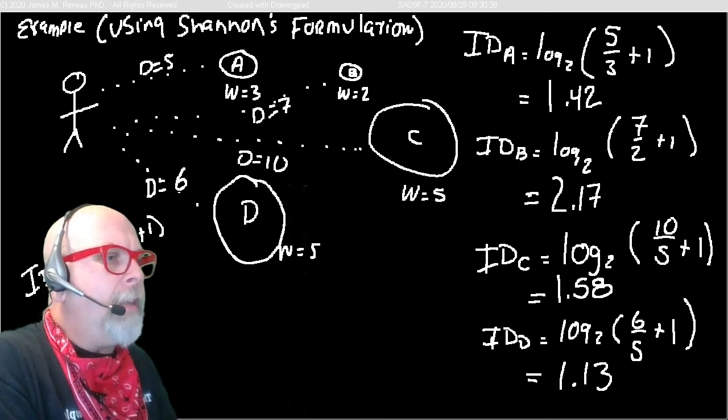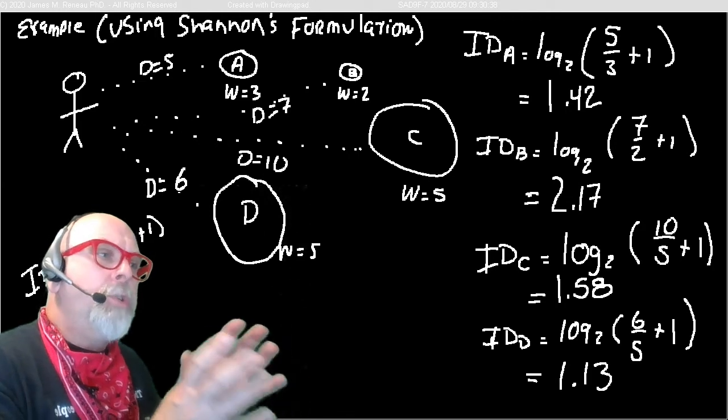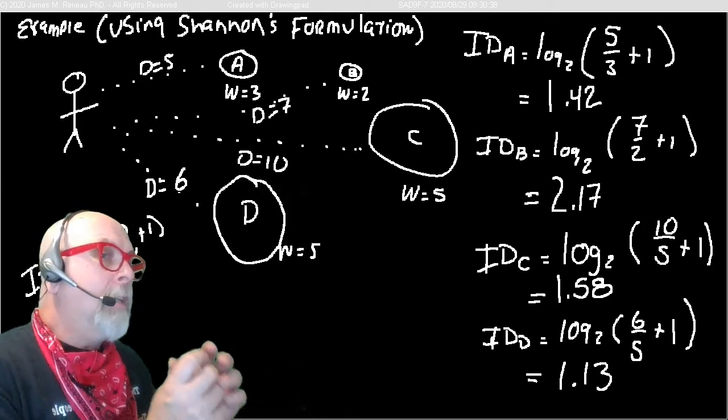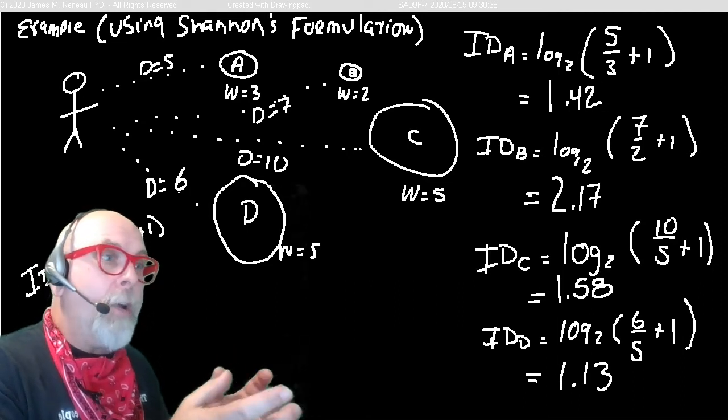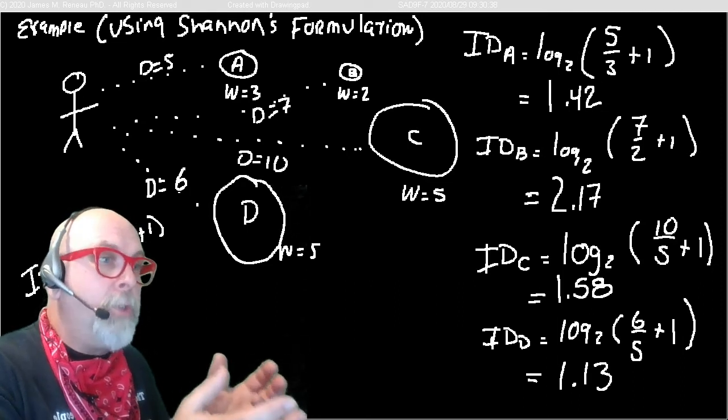They call the index of difficulty represented in bits. But the index of difficulty really is just used to compare the difficulty. Because some users are fast. Some users are slow. Some users have better hand-eye coordination and acuity. And others don't. So this index of difficulty just tries to compare what it would take and to compare the alternatives.